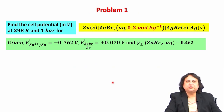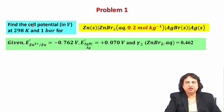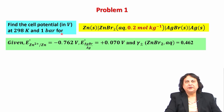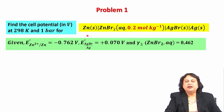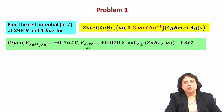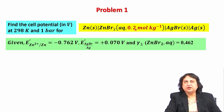Let us have a look at the first problem. Find the cell potential in volts at 298 Kelvin and 1 bar pressure for this electrochemical cell. Let us first try to understand the kind of electrochemical cell that we have. I have here an aqueous solution of zinc bromide, where I have specifically mentioned the strength of the solution.